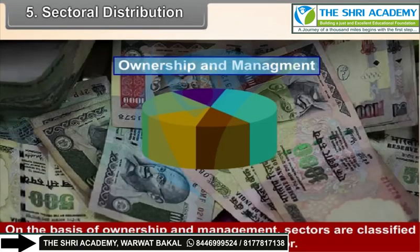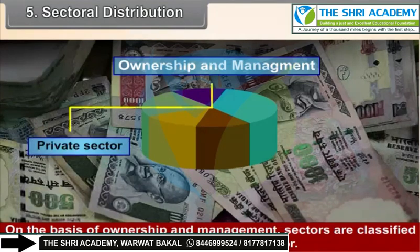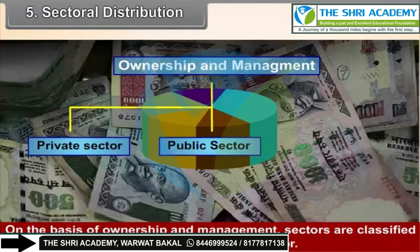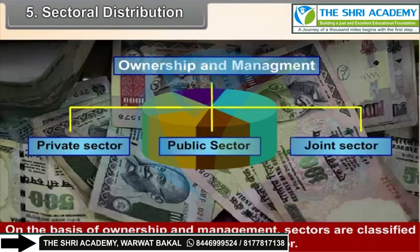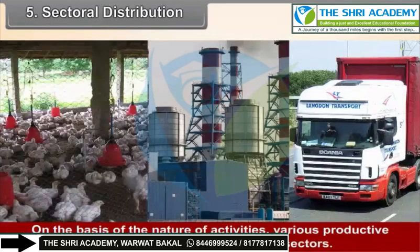On the basis of ownership and management, sectors are classified as private sector, public sector, and joint sector. On the basis of the nature of activities, various productive activities are mainly classified into three sectors.